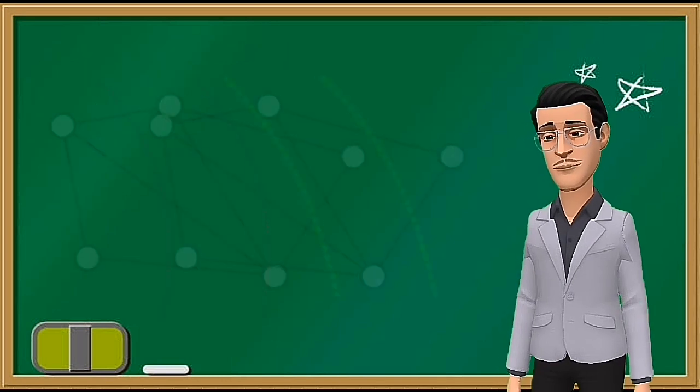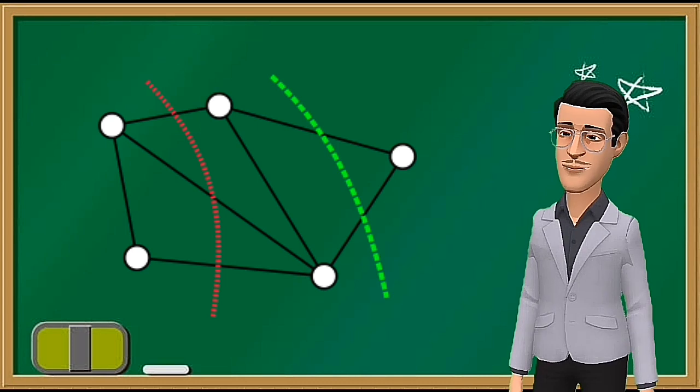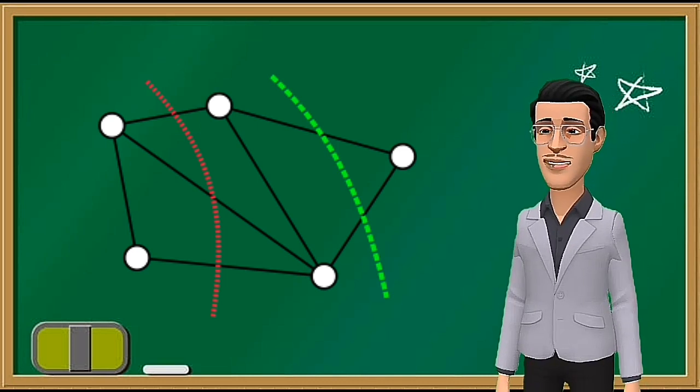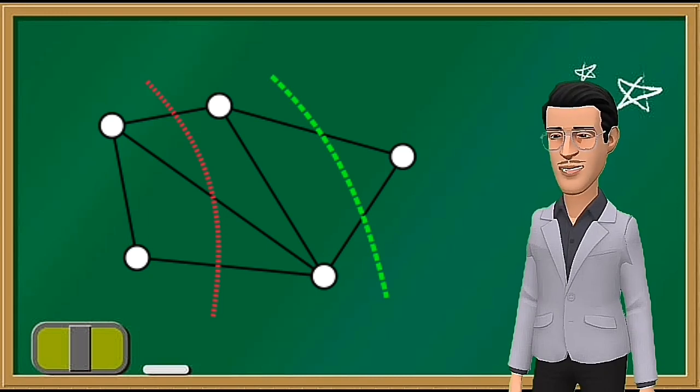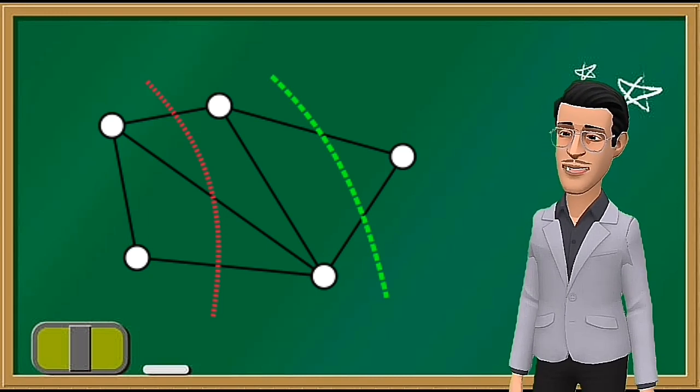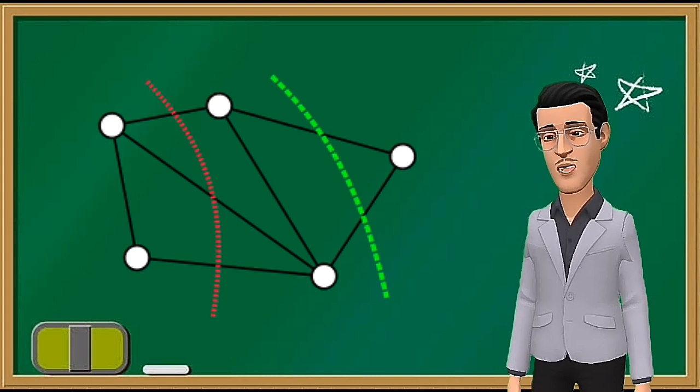The algorithm works on a method of shrinking the graph by merging the most tightly connected vertices until only one node is left in the graph. For each step performed, the weight of the merged cut is stored in a list. The minimum value in the list would be the minimum cut value of the graph.